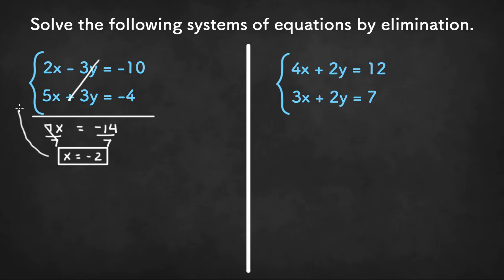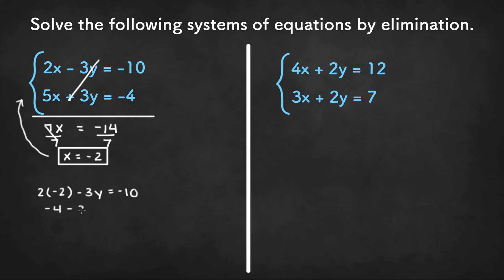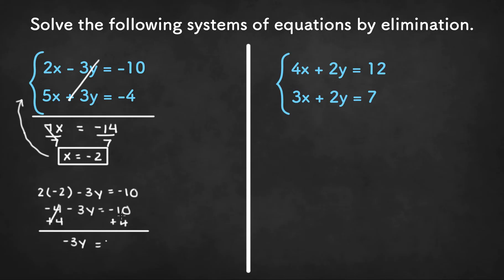Now to get the y value we need to plug x back into one of the equations, and we can choose which one — so let's choose the first equation. If we plug x back in, we'll have 2 times negative 2 minus 3y equals negative 10. 2 times negative 2 is negative 4, so negative 4 minus 3y equals negative 10. We can add 4 to both sides to get negative 3y equals negative 6. Once we divide both sides by negative 3, we are left with y equals 2. So the solution of our system of equations should be negative 2, 2.